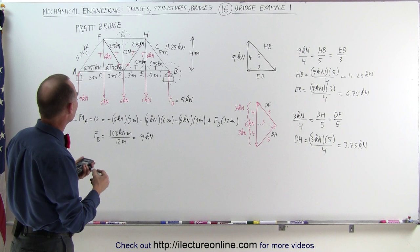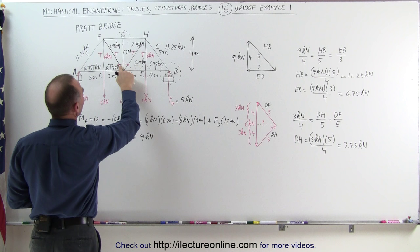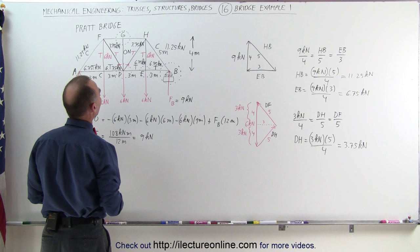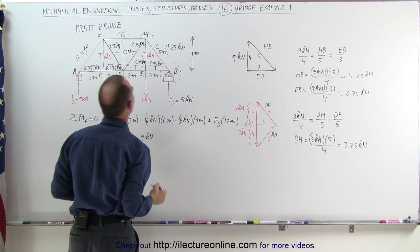In case you're wondering, the four members at the bottom are all at 6.75 kilonewtons. The two top diagonal members are 11.25 kilonewtons each. The two vertical members are 6 kilonewtons each. The inner diagonal members are 3.75 kilonewtons each. The only remaining member to find is from G to H.